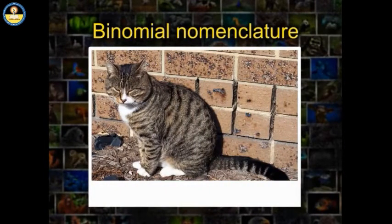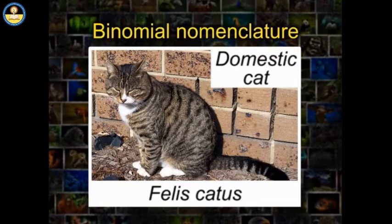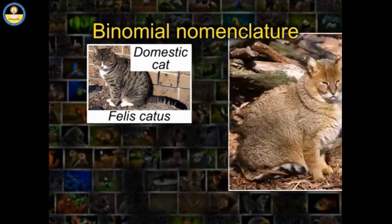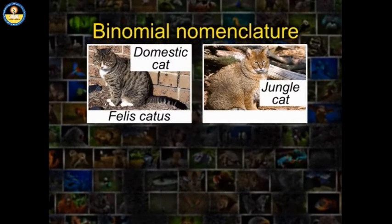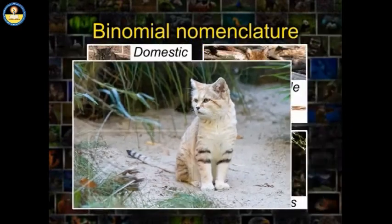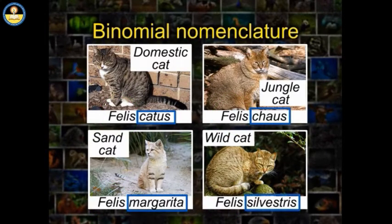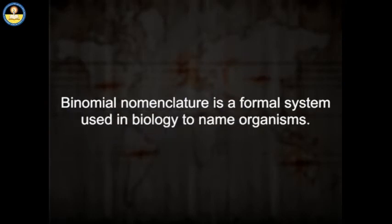Another example: the name for the domestic cat is Felis catus. Felis denotes the genus, whereas catus denotes the unique species used for the domestic cat. Other feline species, such as the jungle cat, is named Felis chaus; wildcat, as Felis sylvestris; and sand cat, as Felis margarita. All these four cats belong to the genus Felis, but each represents a different species: catus, chaus, sylvestris, and margarita.